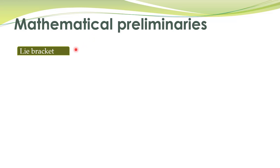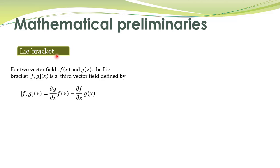Another new definition is the Lie bracket. For two vector fields f of x and g of x, the Lie bracket, denoted by this notation, is a third vector field defined by this relation. That is, the partial derivative of g with respect to x multiplied by f of x, minus the partial derivative of f with respect to x multiplied by g of x. This is called the Lie bracket.